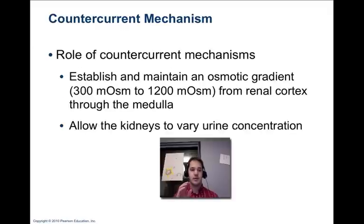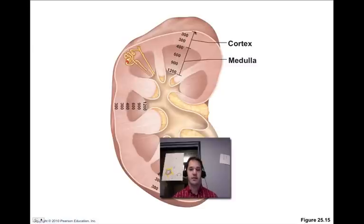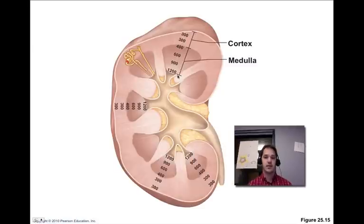The counter-current mechanism establishes an osmotic gradient from 300 milliosmoles to 1200 milliosmoles from the renal cortex through the renal medulla, and it allows the kidneys to vary urine concentration. As we descend from the cortex to the medulla, we get an increasing amount of solutes — increasing osmolality in the interstitial fluid.